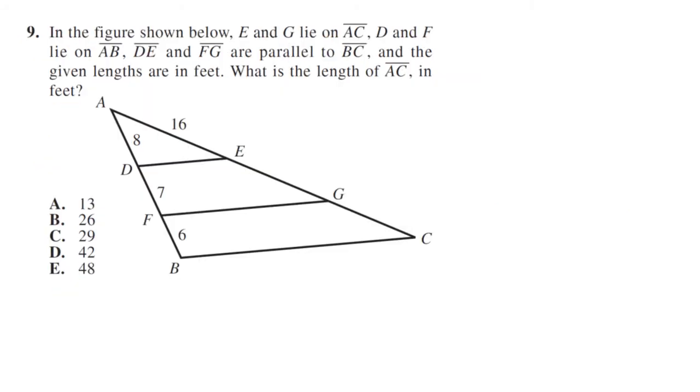The figure shown below, E and G lie on AC, D and F lie on AB. So E, G lies on A, C, so we'll have this whole side red. It's just saying all of those are on the same line. D, F lies on A, B. D, E and F, G are parallel. So that means these points are all on the same side.